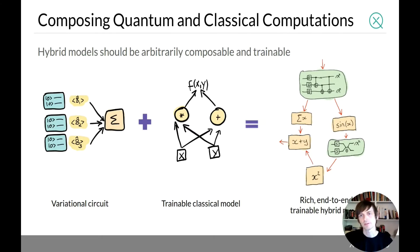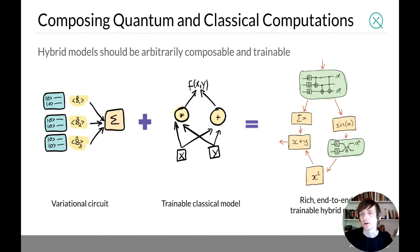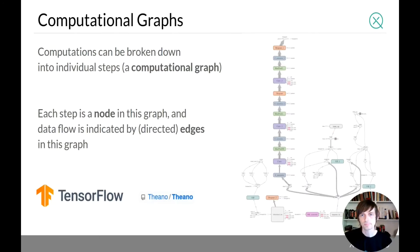That's really the vision I want to push. I think hybrid models are sometimes undersold — they can actually do a lot more than we're currently doing with them. In order to understand how to fit these two pieces together, it's important to think about how classical machine learning software works.